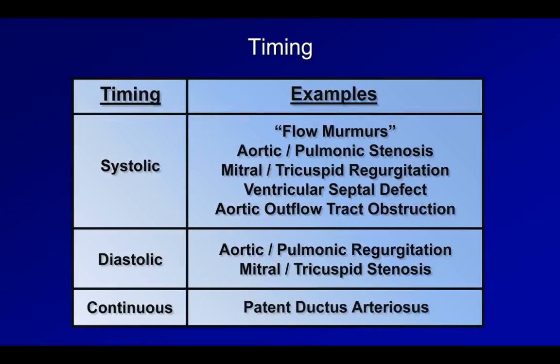Occasionally, a patient may have a systolic and separate diastolic murmur audible in the same region, leading the examiner to perceive a continuous murmur. This most commonly occurs with a combination of aortic stenosis and aortic regurgitation.